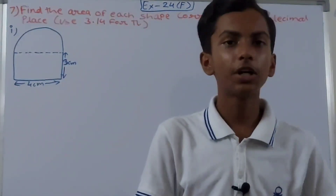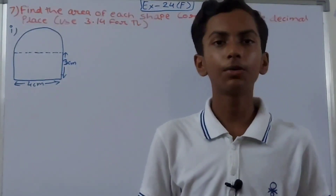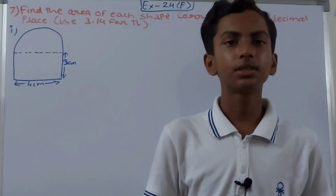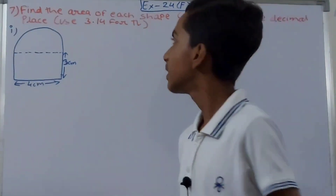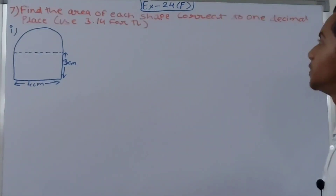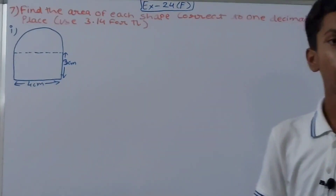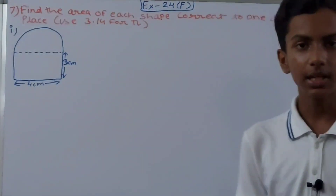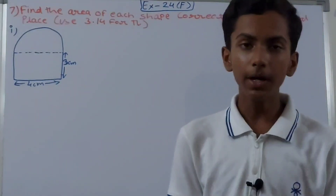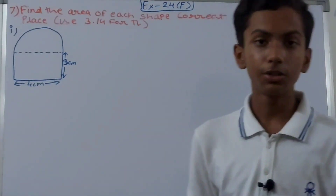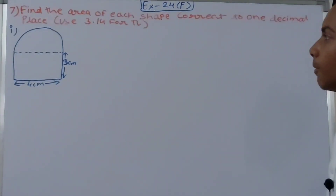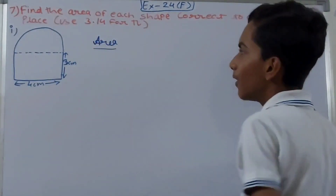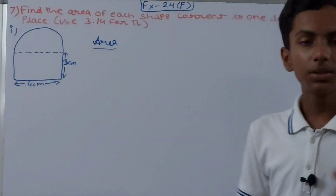Hello friends, welcome back to my YouTube channel Lockyer Learning. In this video we are going to solve ICSE Mathematics Class 7, Chapter 24 Area and Perimeter, Exercise 24F, Question 7. We have to find the area of each shape correct to one decimal place, and then round off our answer to one decimal place. The first thing we have to calculate is the area of the figure.